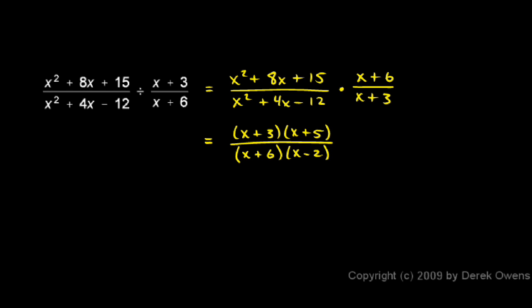And we'll check that real quick. First outer inner last. First gives us an x squared, that's good. The outer is a minus 2 times the x, and the inner is a plus 6 times the x. So that's a minus 2x and a positive 6x, which sure enough gives us a positive 4x. And then the last, the 6 times the negative 2 gives us a negative 12. So we're good there too.